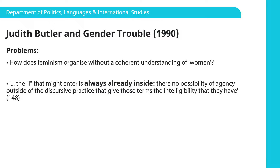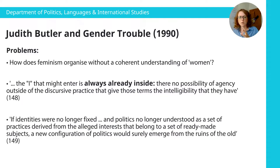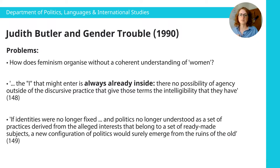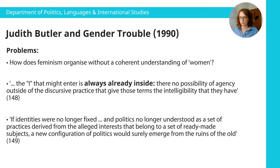The closest we get to an answer is really at the very end of the conclusion, where Butler says, imagining a world if identities were no longer fixed, if politics was no longer understood as a set of practices derived from the alleged interests that belong to a set of ready-made subjects — a new configuration of politics would surely emerge from the ruins of the old. But that's all we get. What would this look like in practice? What's the toolkit or the frameworks we can use to get there? I don't think we really get a sense of that from reading Butler.